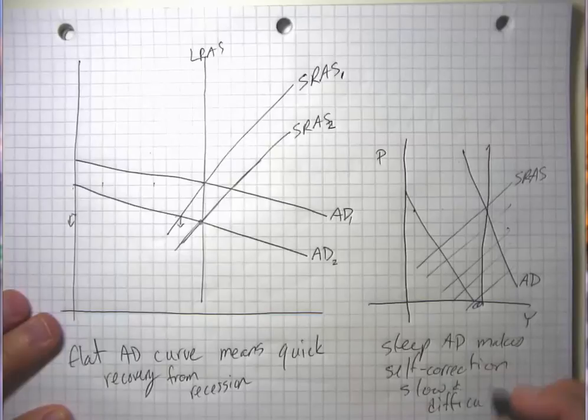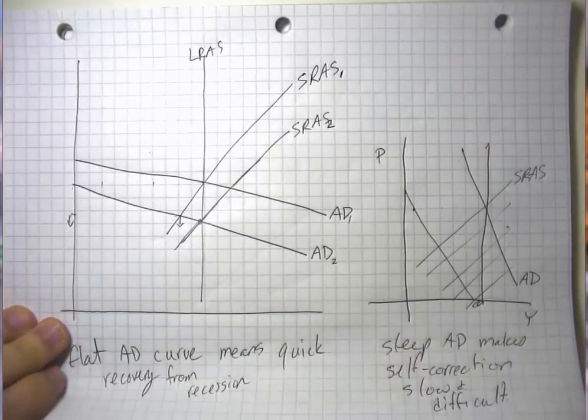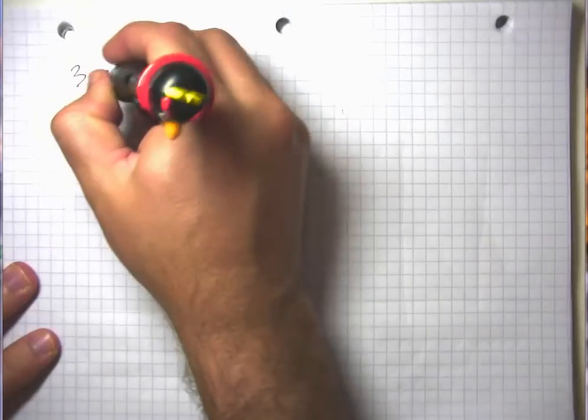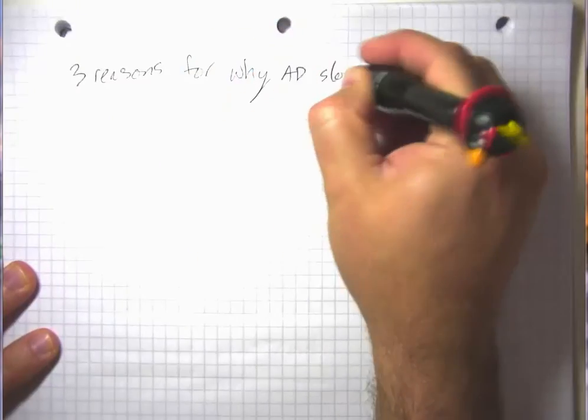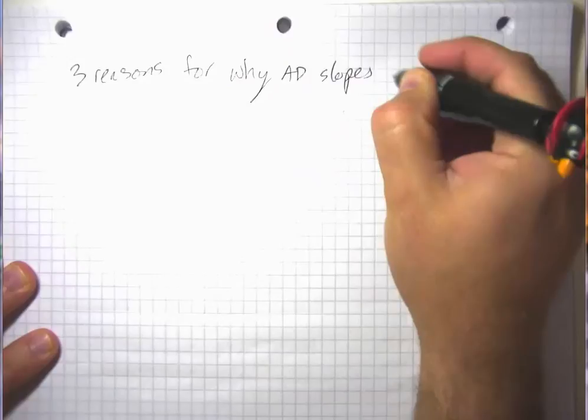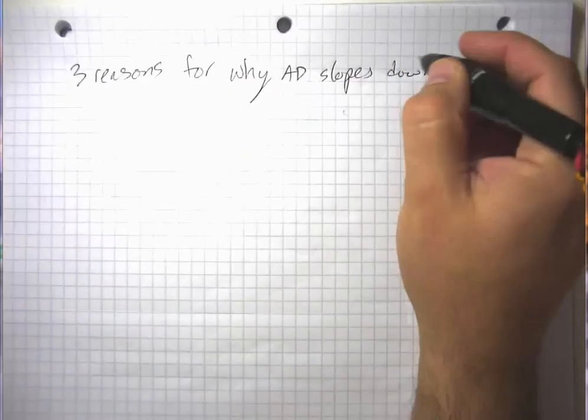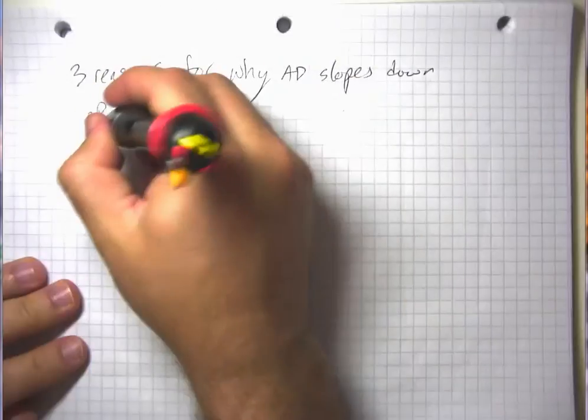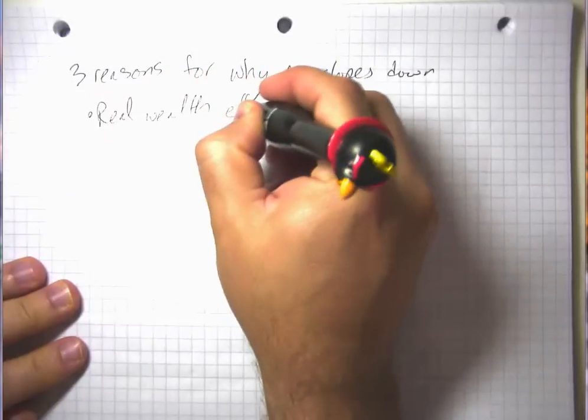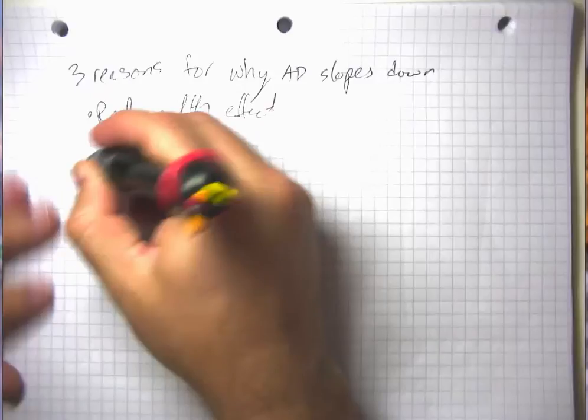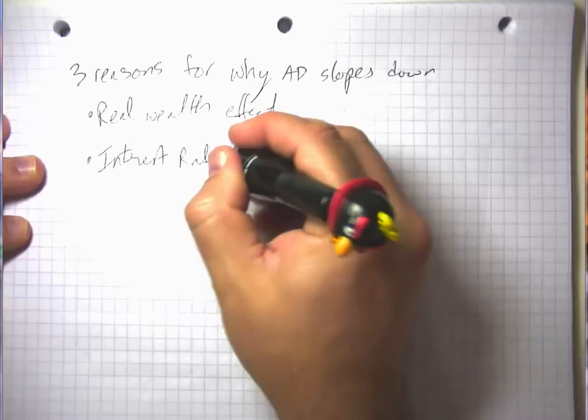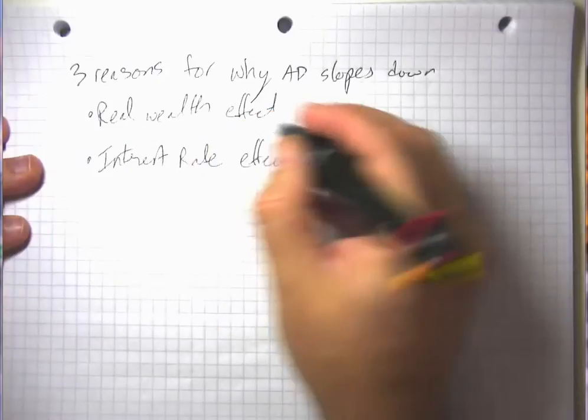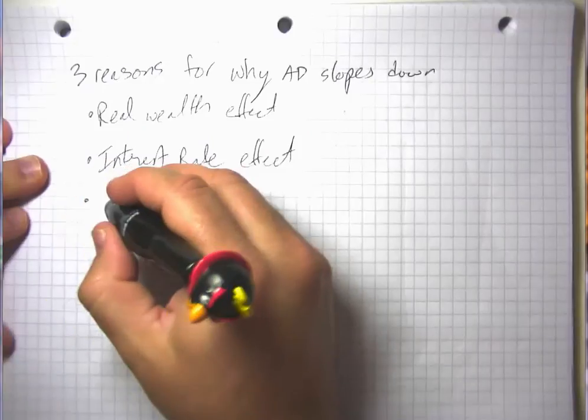It might be that the aggregate demand curve slope isn't constant over time. Remember that the three reasons we have for why aggregate demand slopes down are the real wealth effect, the interest rate effect, and the real exchange rate effect.